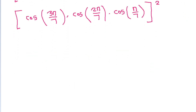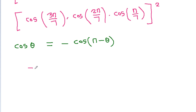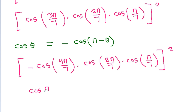We know that cos(θ) equals minus cos(π minus θ), so cos(3π/7) equals minus cos(4π/7). Therefore the expression becomes minus cos(π/7) times cos(2π/7) times cos(4π/7), all squared.